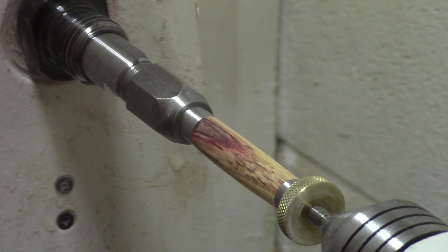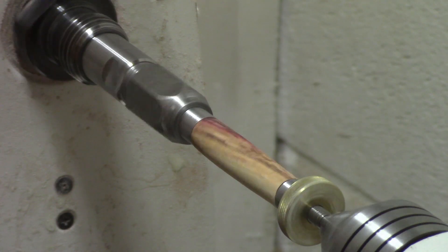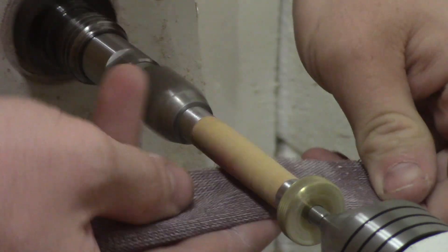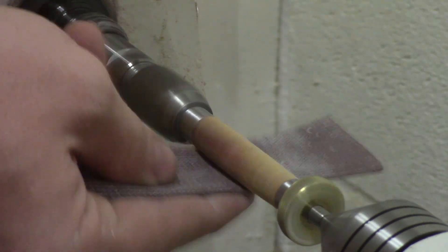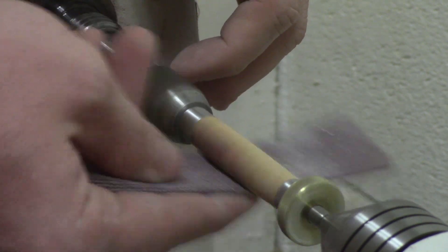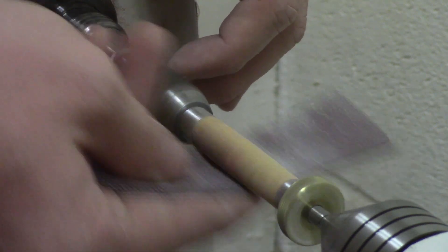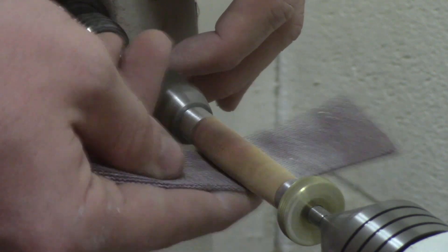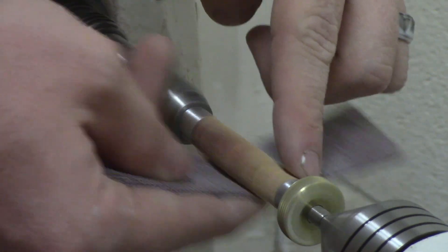I like to do this in reverse and I like it when the lathe is under 500 RPM. I'll start with this 120 grit Abernet and I will sand in reverse, just going back and forth.